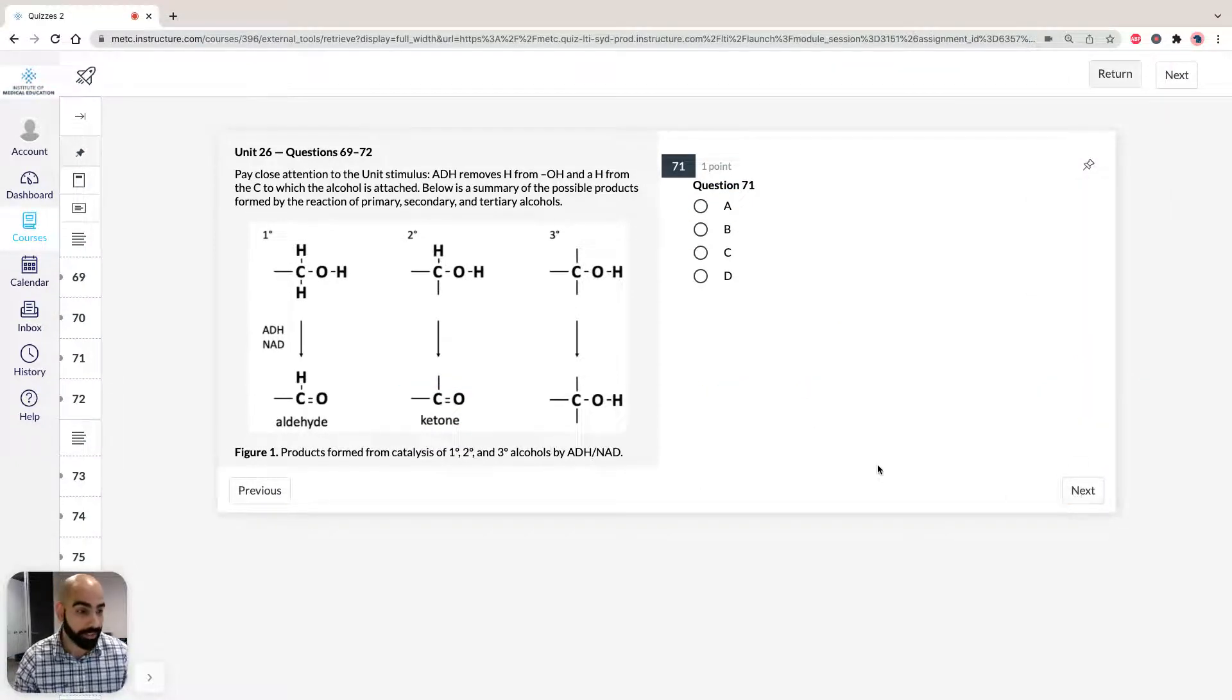Question 71 and 72 are mainly read the statements and see which ones are correct. 71 says illegally brewed spirits often contain methanol as well as ethanol. Consider the following statements about reactions with ADH and NAD with the two alcohols and which one is true. So let's just write them out, methanol and ethanol.